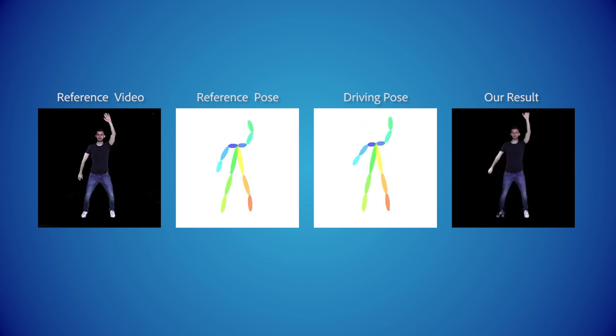The network is able to generate poses where one or even both arms are up despite not having this pose in the training data. However, it fails to generate horizontal arm motion since these limbs were never seen in that orientation.